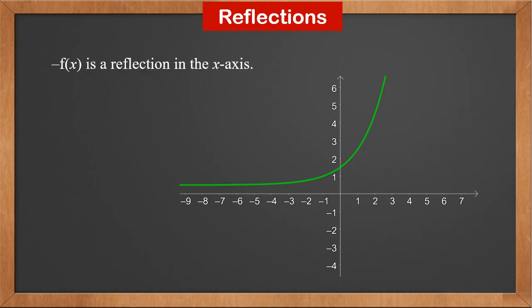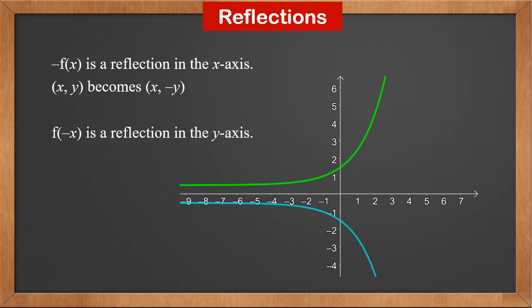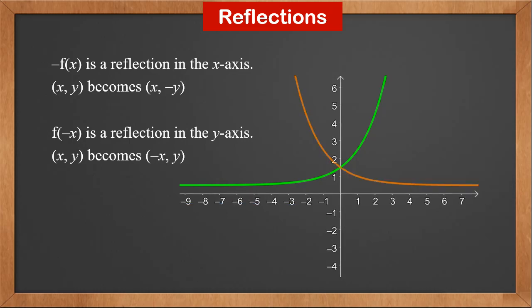−f(x) is a reflection in the x-axis, because every point (x, y) in f(x) becomes (x, −y) in −f(x). The blue curve is −f(x). f(−x) is a reflection in the y-axis, because every point (x, y) in f(x) becomes (−x, y) in f(−x). The orange curve is f(−x).